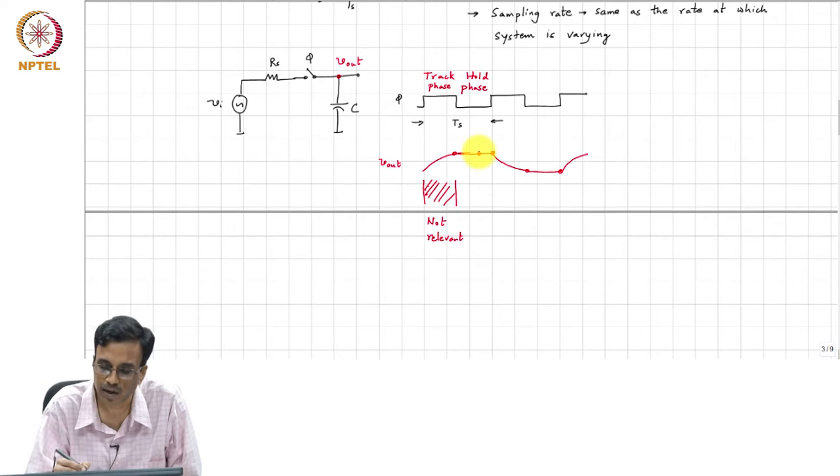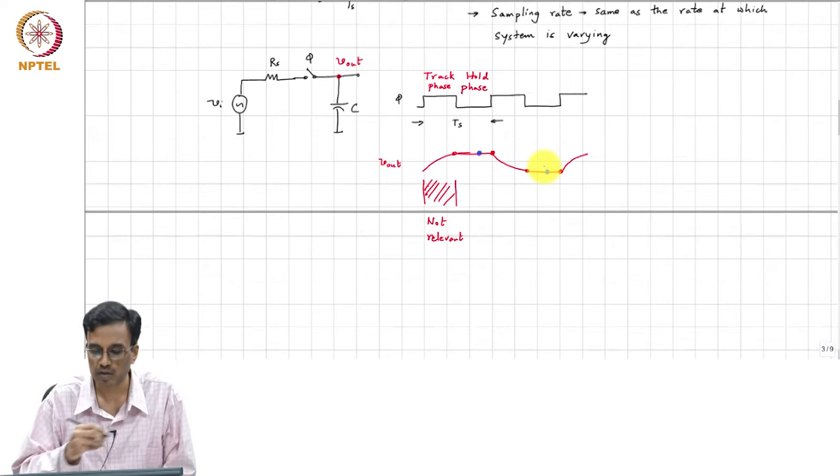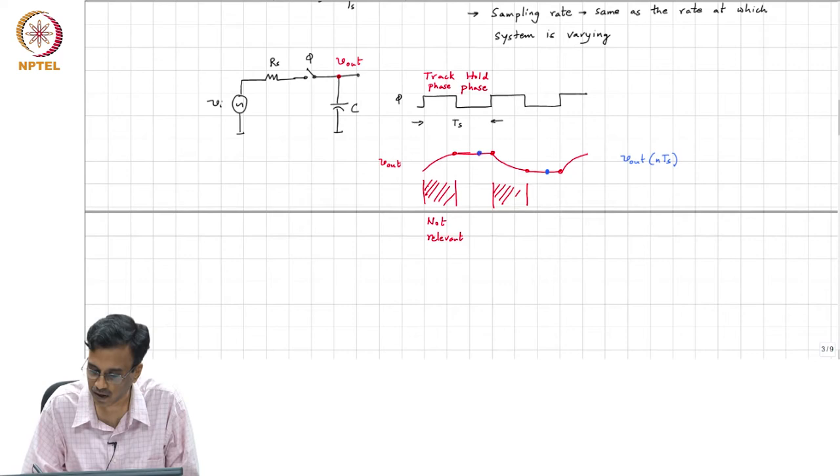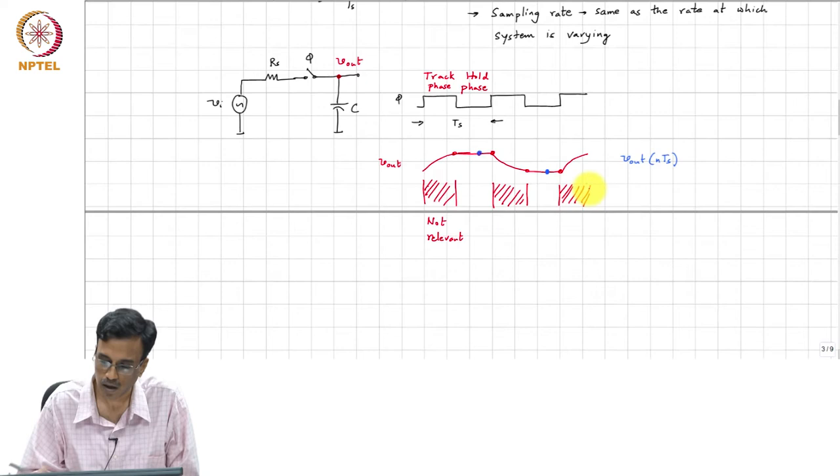Similarly, let's say that is the relevant point and similarly, this is the relevant point, and so on. And so therefore, it is these sampled values, V_out of n times T_s that are relevant. This is the simplified example of a track and hold, which is a system where again only the samples are relevant.